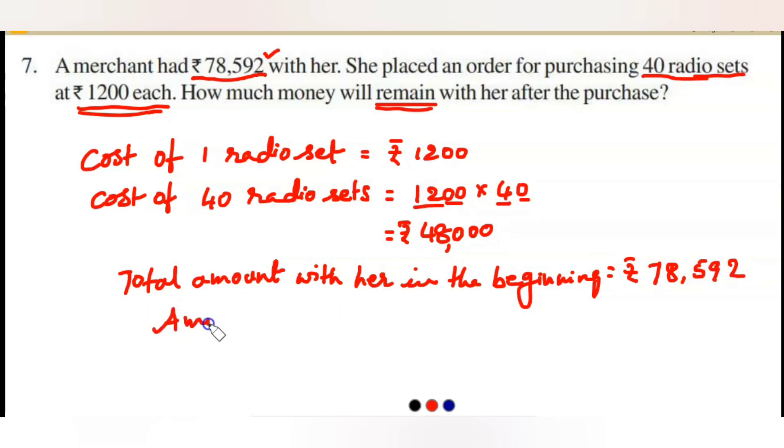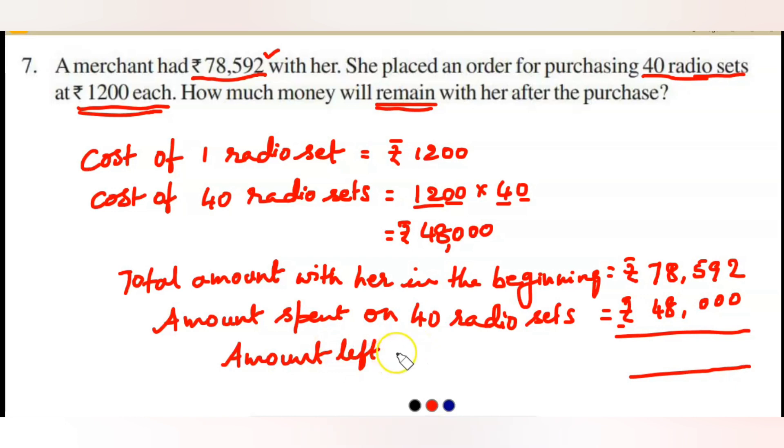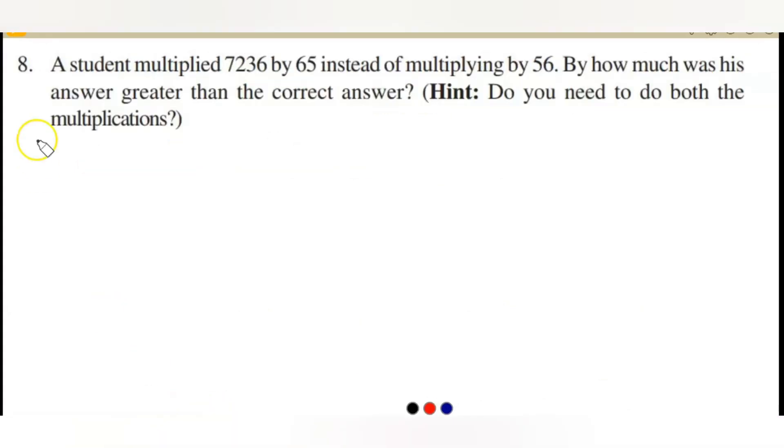Amount spent on 40 radio sets which is 48,000. Now subtract these two. You will get the amount left with her. Write down the amount left with her or remain with her. Let us subtract, very simple, no borrowing at all. So 30,592 is the amount she left with her after the purchase of 40 radio sets. Next, let us go to the next question.